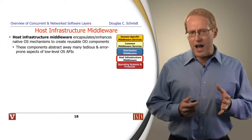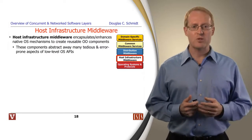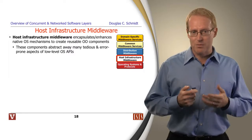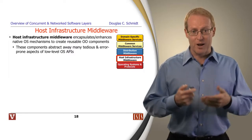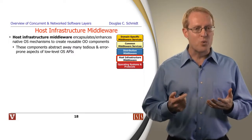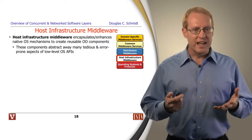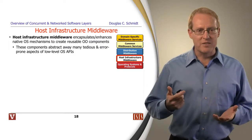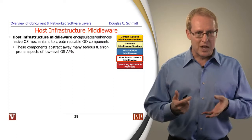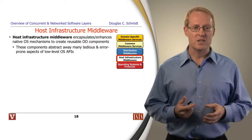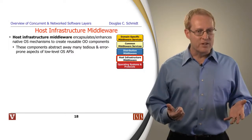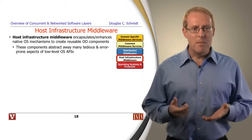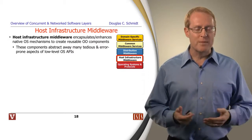If an operating system is a hardware abstraction layer, then host infrastructure middleware is an operating system abstraction layer — it abstracts away from the diversity in the underlying operating systems. Despite lots of attempts at standardizing operating systems, there are a wide variety of different versions of Linux and Unix, different versions of Windows, and many different real-time and embedded systems. And even if there was just one, the programming interfaces for most of those operating systems tend to be written in low-level languages like C, which are full of accidental complexities.